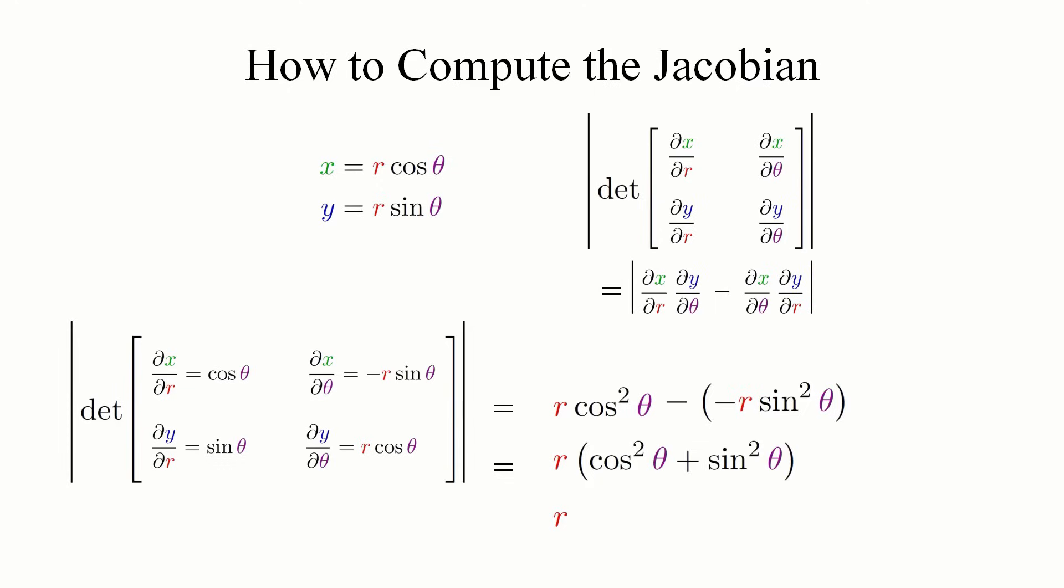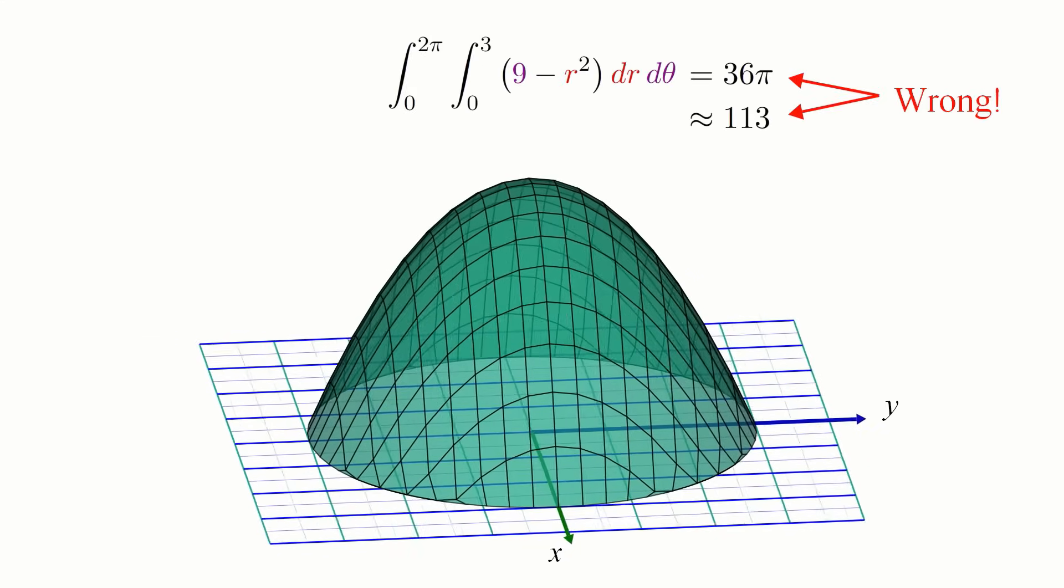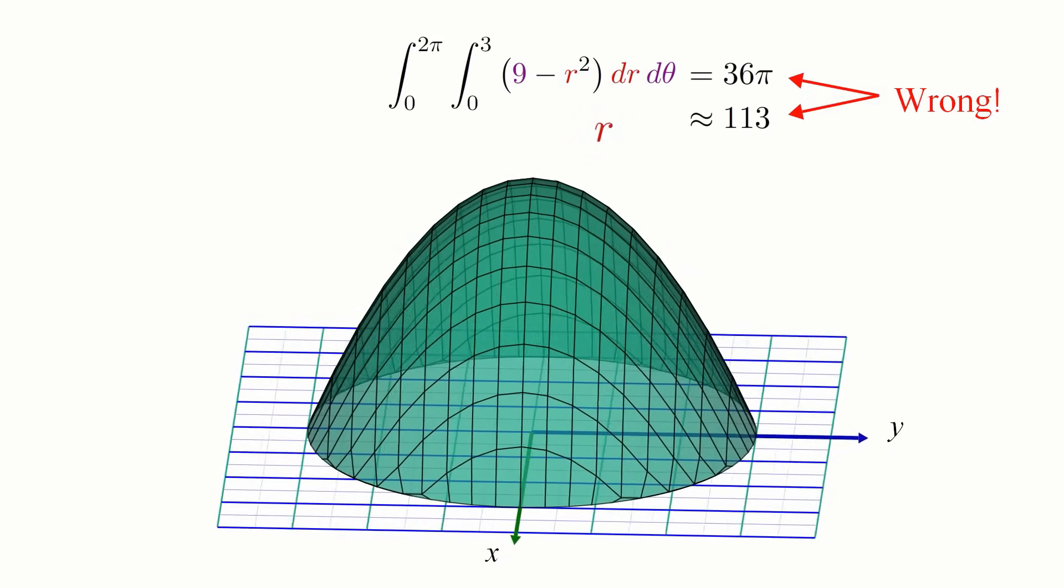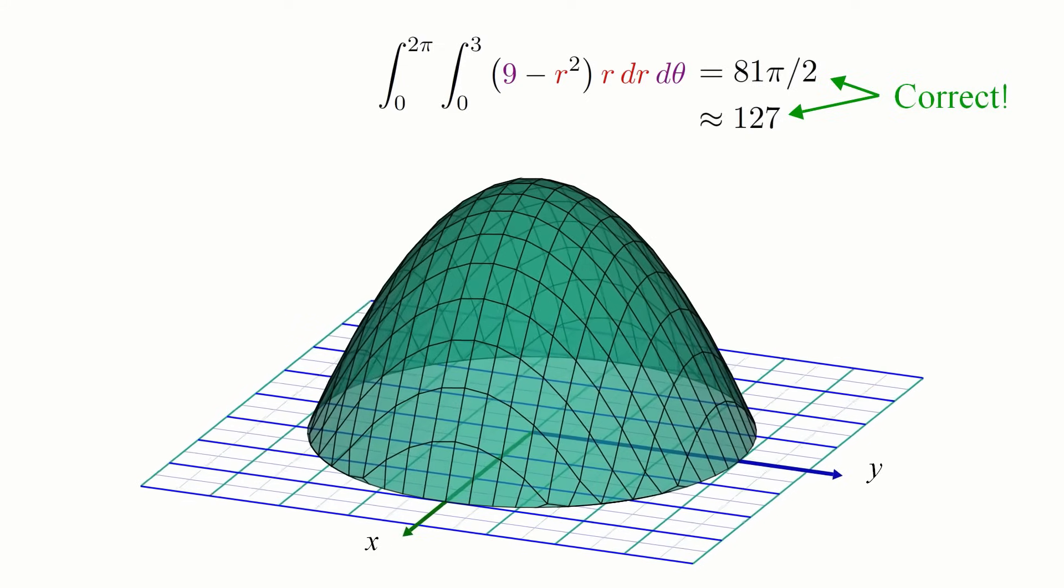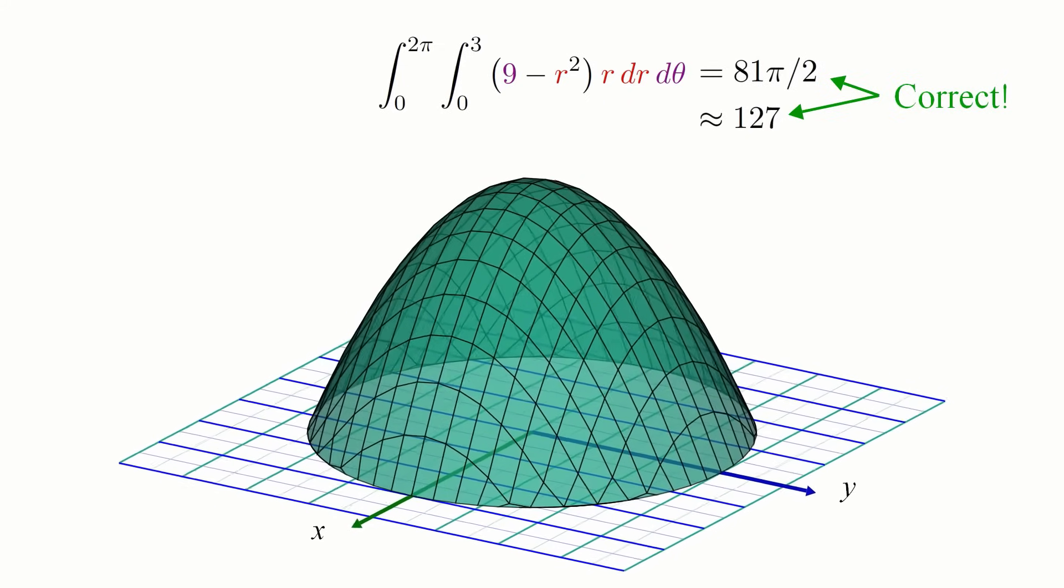Now, technically, we should also take its absolute value. But when using polar coordinates with integration, we almost always use only positive r values, so it's generally fine to omit the absolute value here. So there you have it. Our Jacobian scale factor is r, and if we insert it into our original volume double integral, we find it computes 81 pi over 2, which is the true volume of the solid we started with.